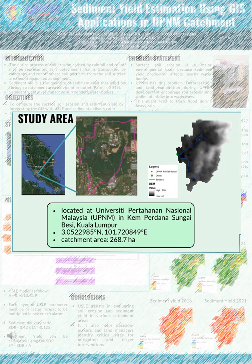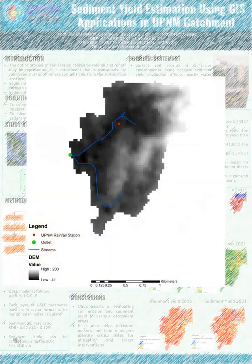The study area is a catchment at Universiti Pertahanan Nasional Malaysia (UPNM) in Kemp Perdana Sungai Besi, Kuala Lumpur. Its coordinates are 3.0522985° North and 101.720849° East. The catchment area of the watershed is about 268.70 hectares, which includes two streams and one outlet point. This study area is rapidly developing since it is located near the capital city. The digital elevation model of the UPNM catchment shows its stream patterns and the outlet. There is only one rainfall station located in the study area, and the slope and elevation of the area reach up to 200 meters, with the lowest elevation at 41 meters.